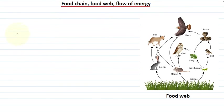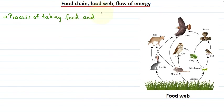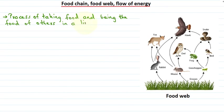The process of taking food and being the food of others in a linear manner is called the food chain.